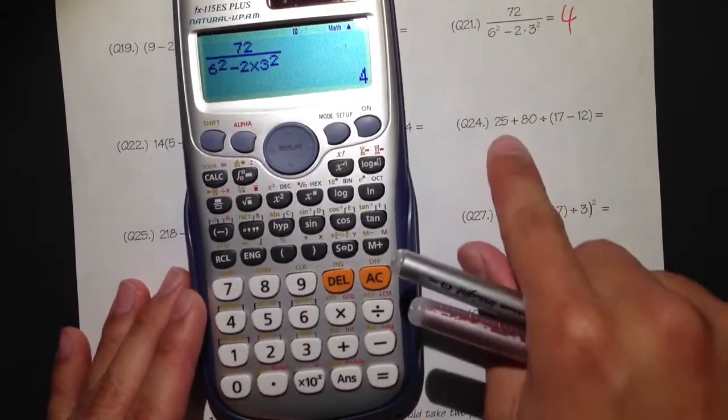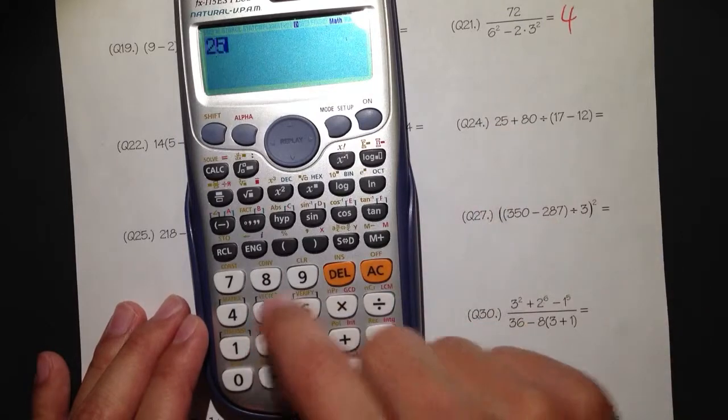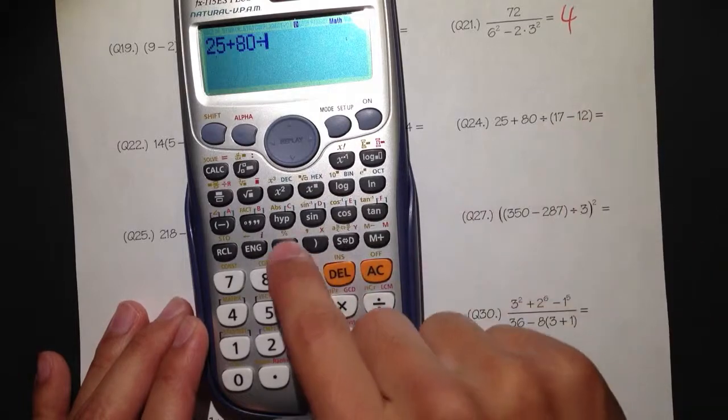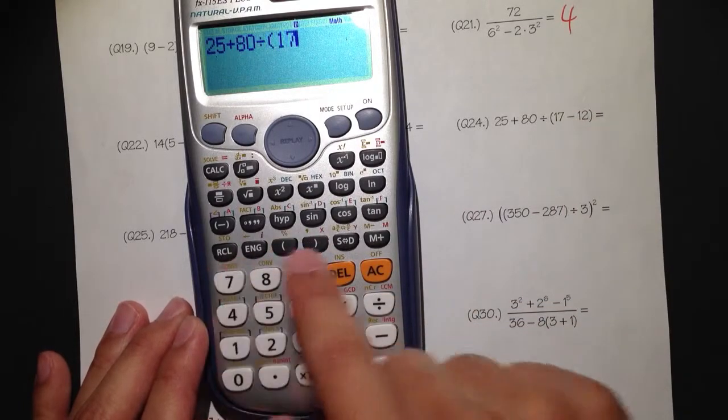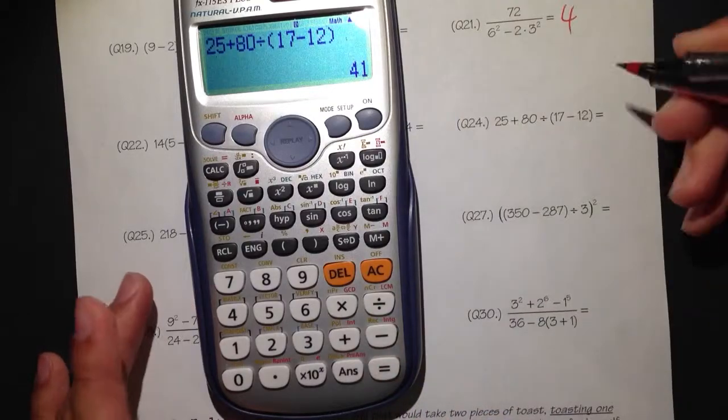And then, 24. 25 plus 80 divide by - I see the parentheses. Parentheses. 17 inside. Minus 12 inside. And then close parentheses. We get 41.